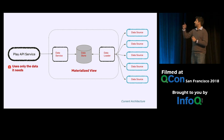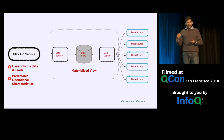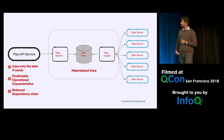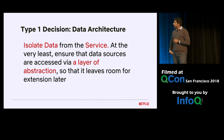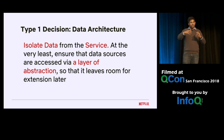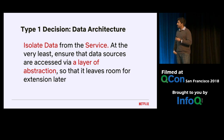The benefits: it uses only the data it needs, it doesn't load all data in memory, and because of that, we have a very predictable operational characteristic. A nice side effect is that the number of dependencies assembled within the play API service was also significantly reduced. If you think building such a big redirection architecture for your data is an overkill, at least consider building an abstraction or anti-corruption layer so that whenever the need arises, you can move the data source outside of the service into its own separate service. The type one decision here is: isolate data from the service, and at a minimum, ensure there is a layer of abstraction.